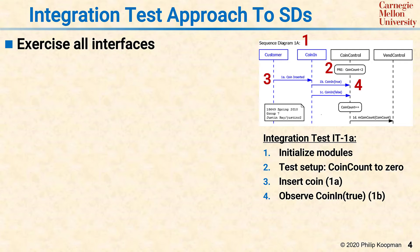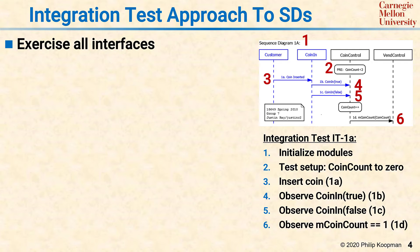The coin-in signal is received in steps four and five. There's a side effect that happens — there may not be a way to observe it — but in step six, the result of that side effect is observable. In the end, the point of the integration test is to exercise a specific sequence diagram.